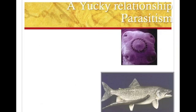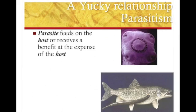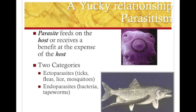The next relationship is parasitism. It's different than predation because the parasite feeds on a host or receives benefit at the expense of the host, but it doesn't want to kill the host. There are two categories: ectoparasites are outside the body, and endoparasites are inside the body. The important piece is that the parasite doesn't kill the host — it just feeds off of it.